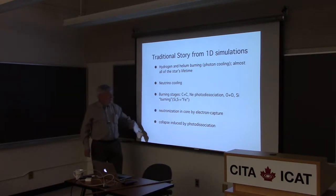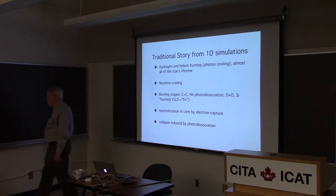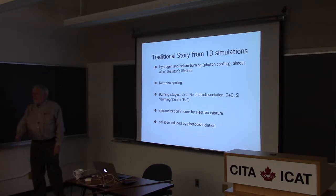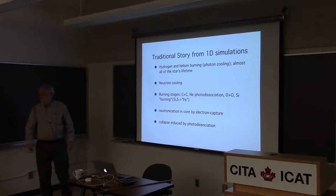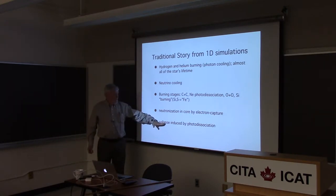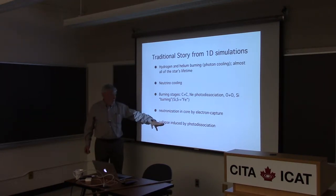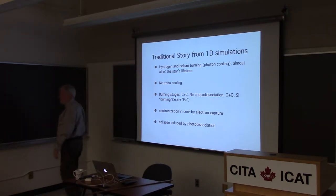Here are the various burning stages. The thing that many of us are really interested in is the neutronization of the core just before core collapse—that's the last thing that sets up the initial value problem for making a neutron star, a black hole, or a gamma ray burst. The thing that pulls the rug out from under the star and throws it into dynamic instability is the photo disintegration of nuclei at high temperatures.